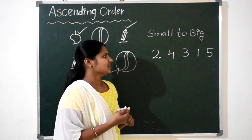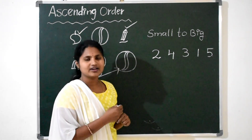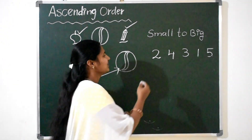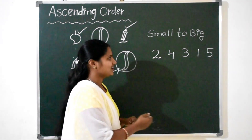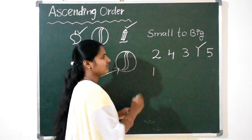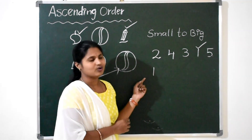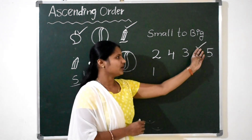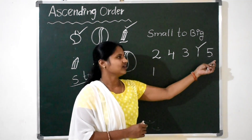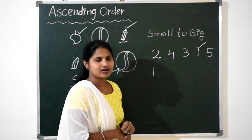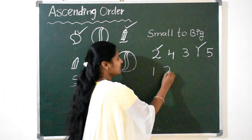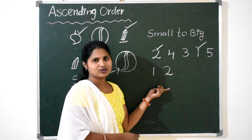How to arrange? Tell me which number comes first in ascending order. The smallest number comes first. So what is the smallest number here? Compare all the numbers. 1 is the smallest number, so write 1 in the first place. Now compare 2, 4, 3, and 5. What is the smallest number? Very good, 2 is the smallest number. Tick number 2 and write it.